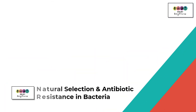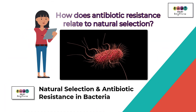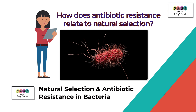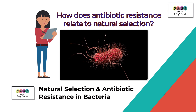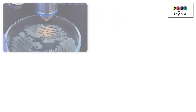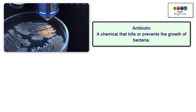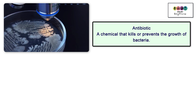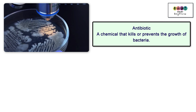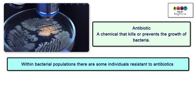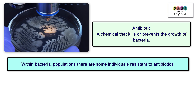Natural selection and antibiotic resistance in bacteria — how does antibiotic resistance relate to natural selection? Be able to give an account. An antibiotic is a chemical that kills or prevents the growth of bacteria. Within bacterial populations there are some individuals that would be resistant to antibiotics.